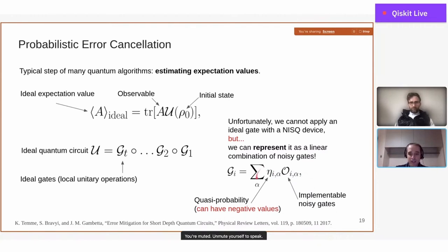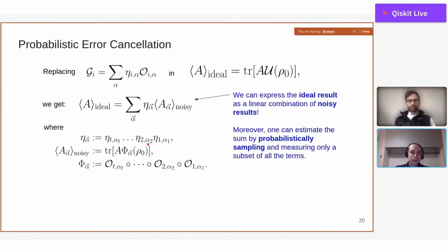If we now replace this expansion into the circuits—if we take the gates and put in the expansion of the circuits—we get the ideal expectation value expressed as a linear combination of noisy expectation values. It is important to notice that these expectation values can be measured, so they are expectation values evaluated with circuits that are composed only of implementable noisy operations.